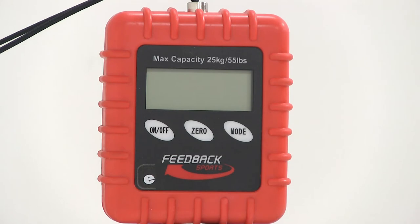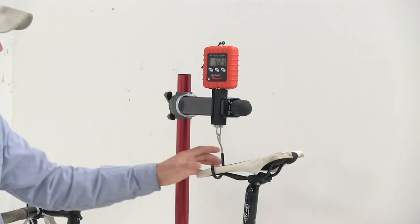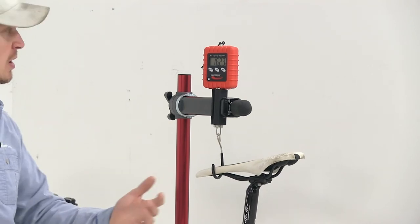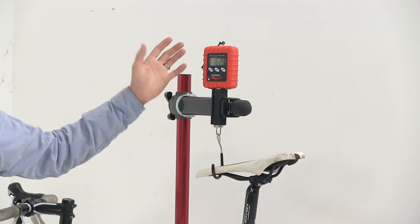The auto shutoff is going to save power, and it includes four AAA batteries. It features a vinyl-coated hook, so we don't have to worry about it harming or scratching our gear. And it features a weight capacity of 55 pounds.